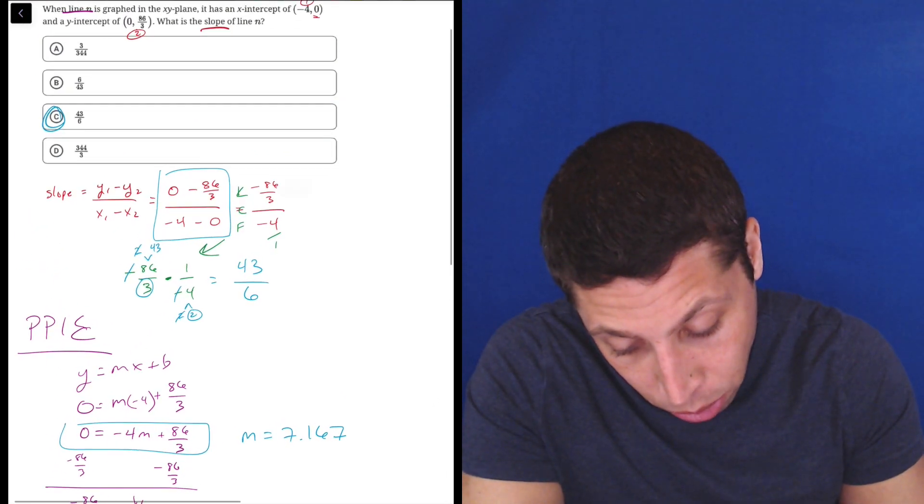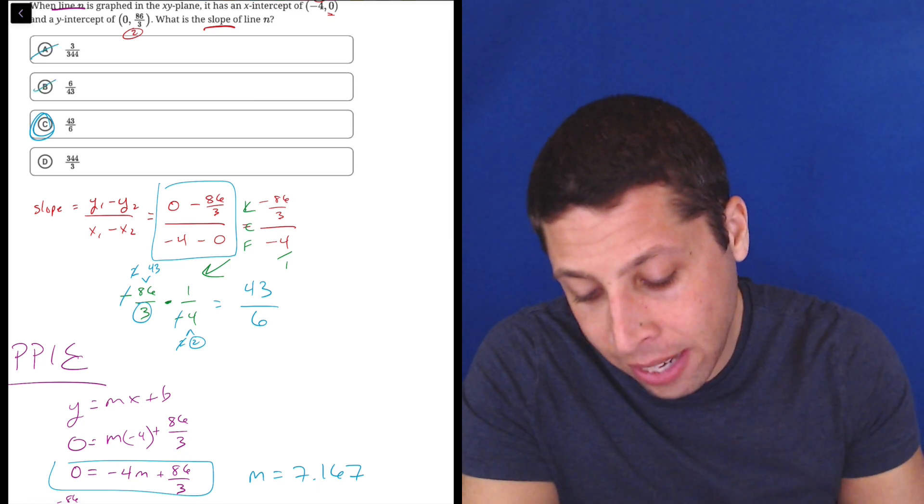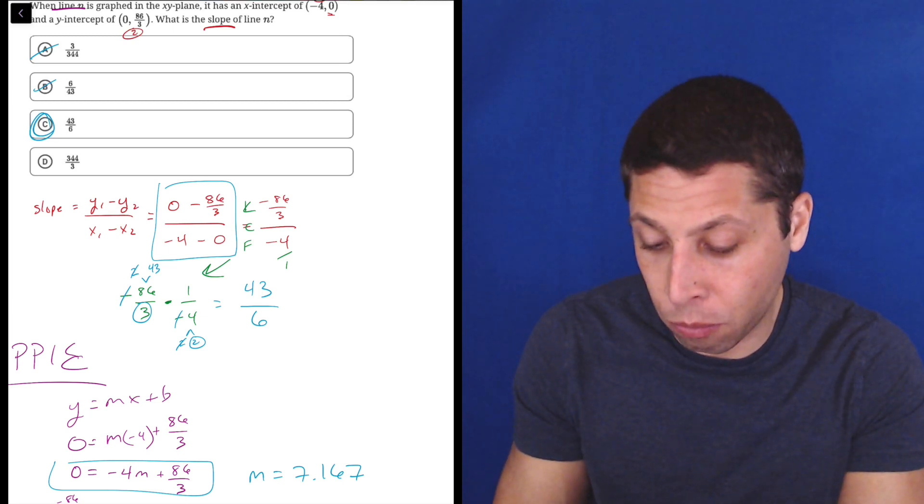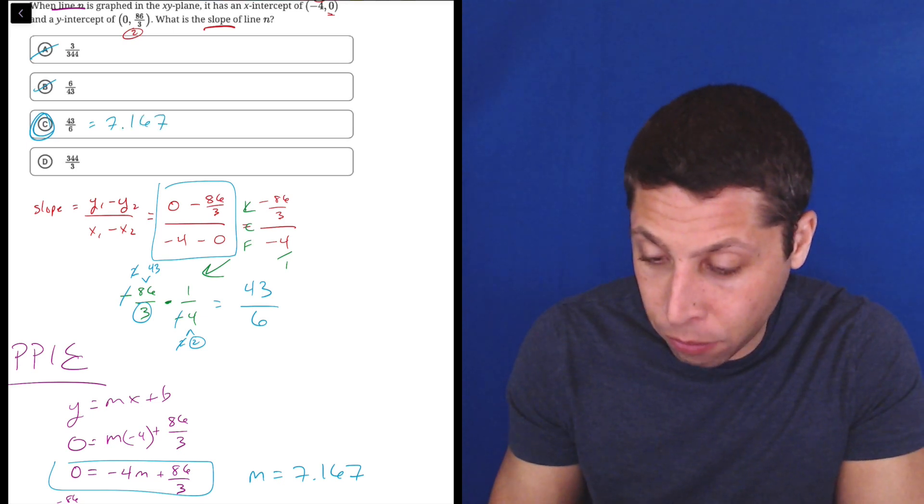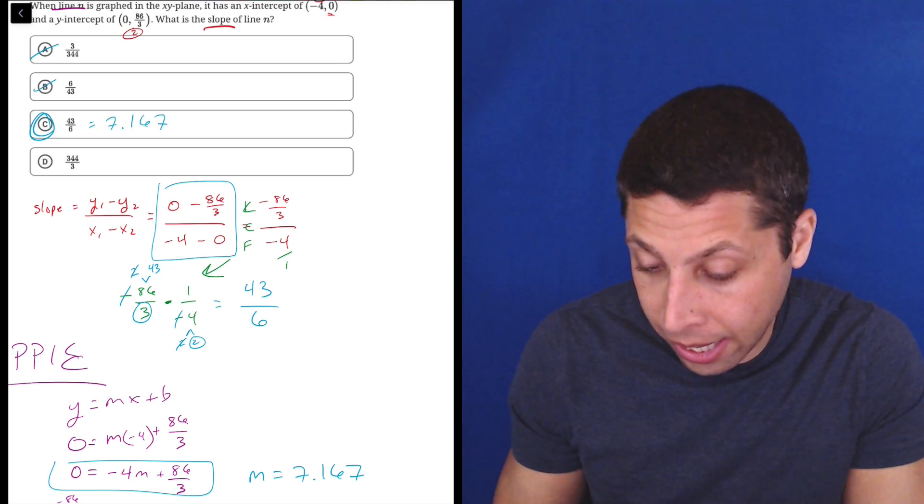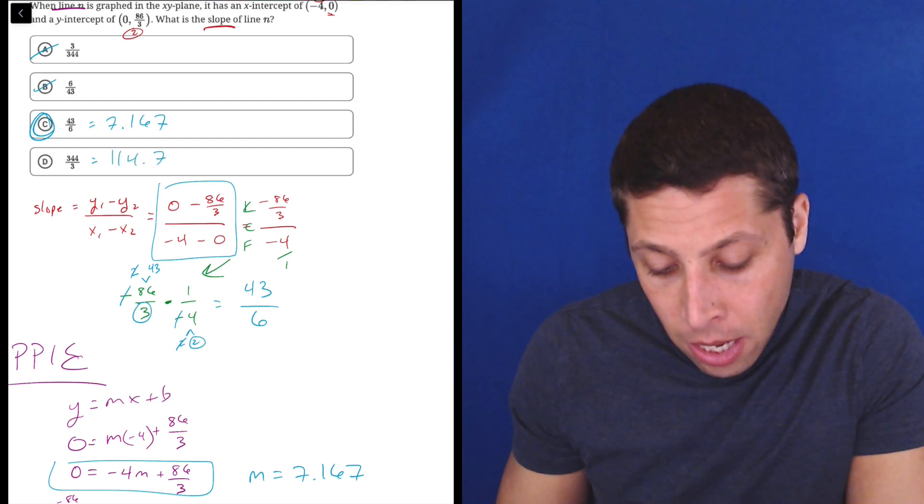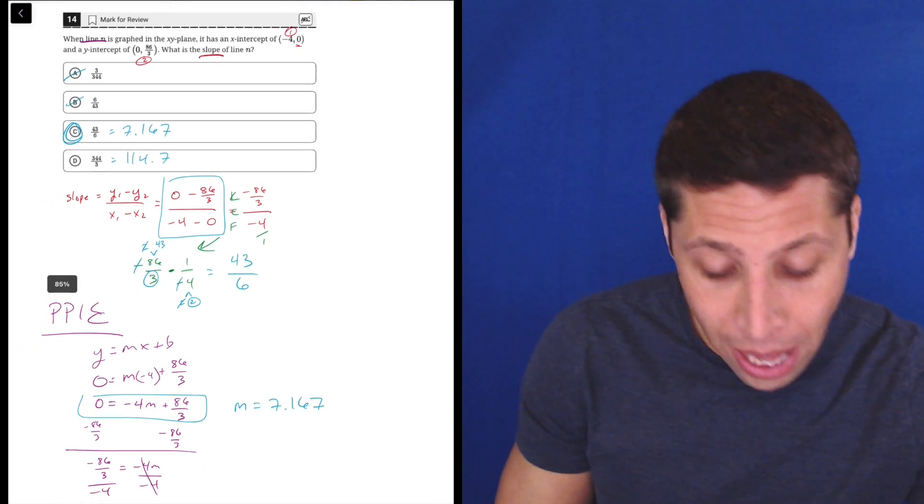And then at that point, it's just go to the choices and find the one that equals that. Well, a and b definitely don't because those are both going to be less than 1. And then in my calculator, I would just do 43 divided by 6. I could do it in Desmos too, but that's 7.167. And 344 divided by 3 is huge, 114.7. So we would see that C is right without having to deal with all the fractions.